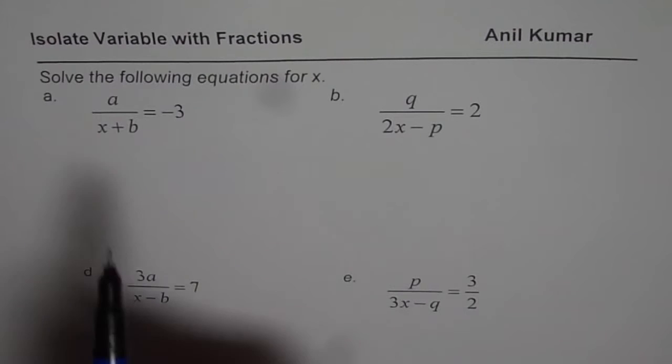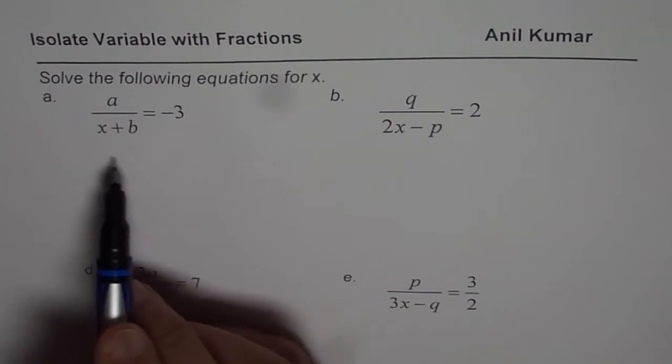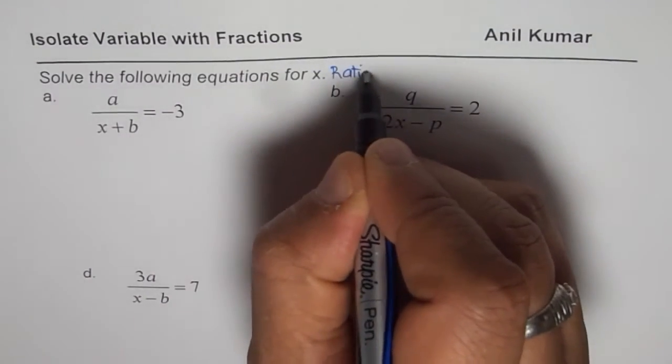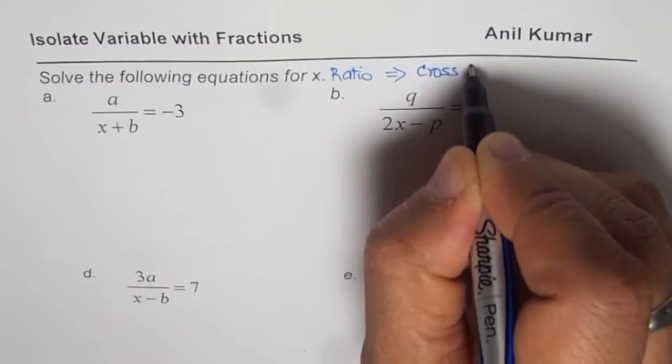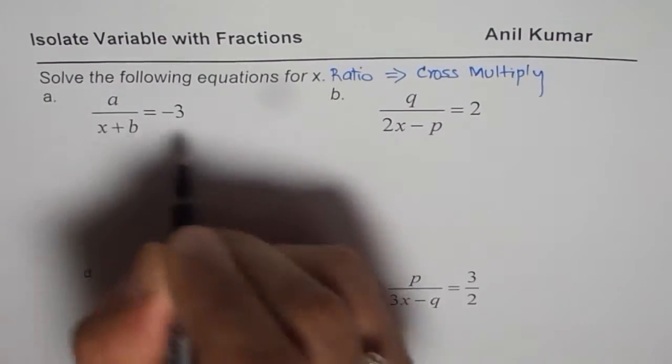Here is how we will solve. First step, whenever you have a ratio kind of situation, the strategy for us is cross multiplication. That is the strategy. So cross multiply to simplify.